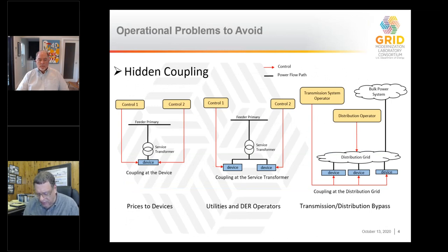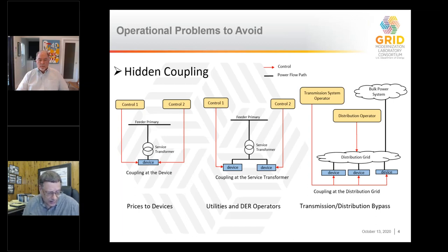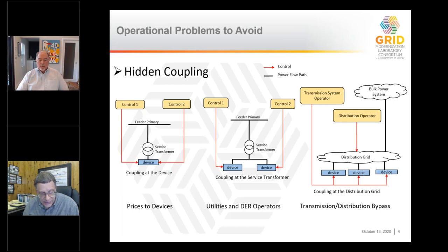One of the things that can happen is hidden coupling, and it can occur in a number of different ways. For example, if you have a device — a rooftop solar inverter, a storage unit, or any number of things behind the service transformer — and you have two different processes trying to control it, such as two different processes using price-based methods, they can end up fighting each other, in conflict if there's no coordination between them. We've actually seen this happen with one process overwriting the prices left by another. Another way this happens is two different control mechanisms manipulating devices on the same service transformer secondary, creating conflict — we've seen this with utilities controlling some assets and DER operators controlling others.